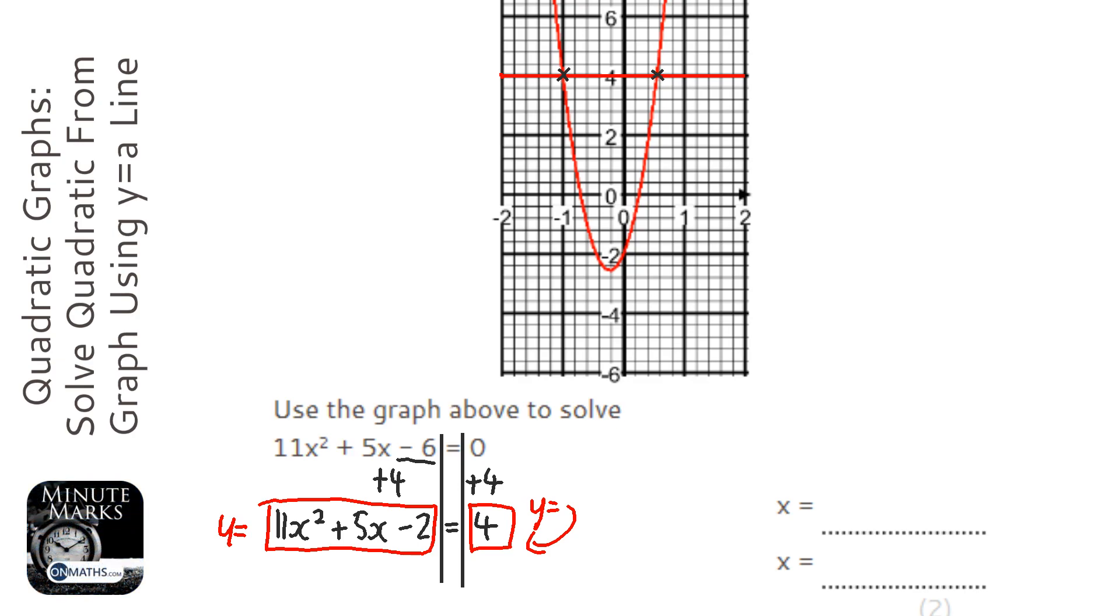And by the looks of it, that left-hand one is minus 1. And the right-hand one, it could be anything between 0.5 and 0.6. I think I'd go for 0.5 on that.